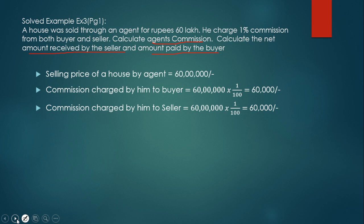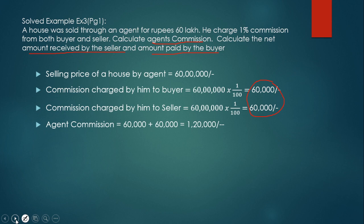Now, the total agent commission is the sum of both commissions. Total commission received by the agent in this transaction = 60,000 + 60,000 = 1,20,000.